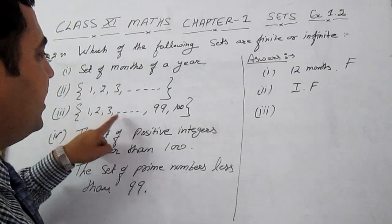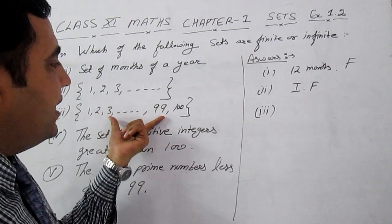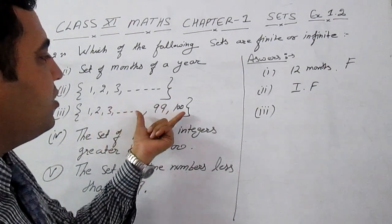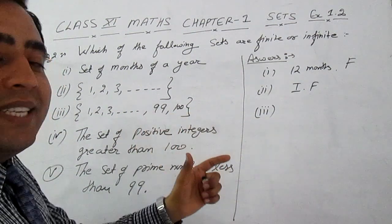We know that these are countable numbers from 1 to 100. These are natural numbers. We can count from 1 to 100, so these are a finite number of elements; therefore, this is a finite set.